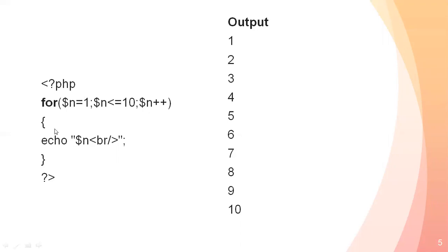Here I am printing $n, and for a new line I use the br tag, then close with curly braces and the PHP closing tag. When we run it, the output on screen shows 1, 2, 3, 4, 5, 6, 7, 8, 9, 10. When n reaches 11, the condition $n less than or equal to 10 is false, so it terminates — giving us output 1 to 10.